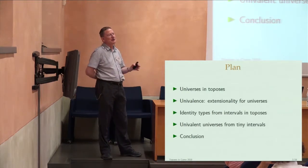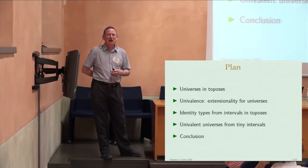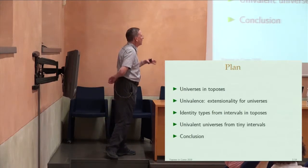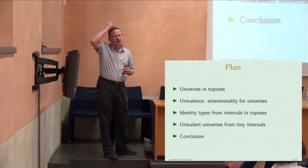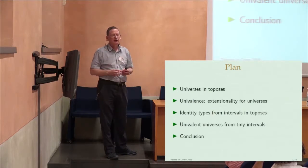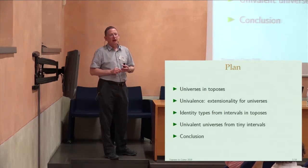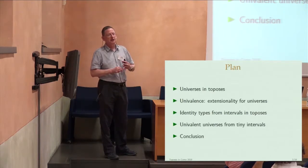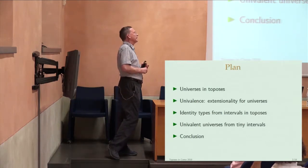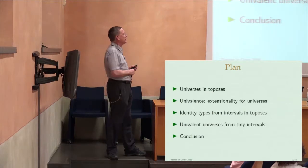There is some very slight connection with the previous talk in the sense that I will be talking about toposes and intervals, but that's probably about as far as it goes. I want to sketch the current state of the art for making a universe with the extensionality property called univalence, by starting with an interval which is tiny. Bill Lawvere introduced the concept — he called it atomic, but that's a very overused word, so it got rebranded as tininess. Tiny intervals can give us univalent universes, modulo some other assumptions.